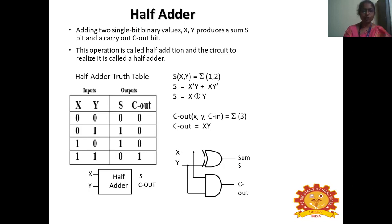2 power N determines the number of combinations. Here N equals 2, so 2 power 2 gives four combinations. When X=0, Y=0, sum=0 and carry=0. When X=0, Y=1, sum=1 and carry=0. When X=1, Y=0, sum=1 and carry=0. When X=1, Y=1, sum=1 and carry=1.